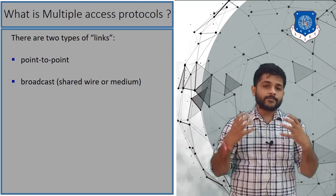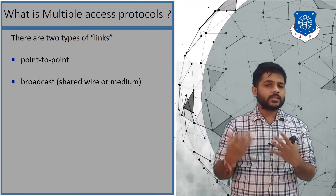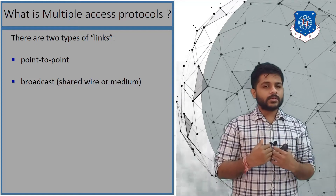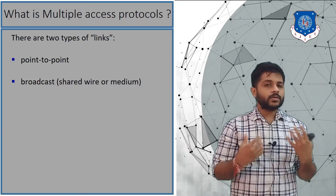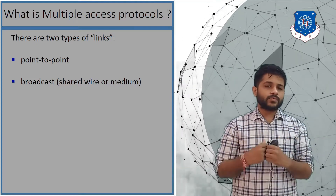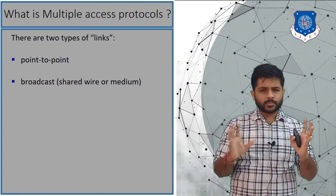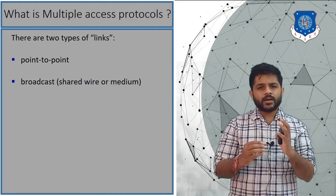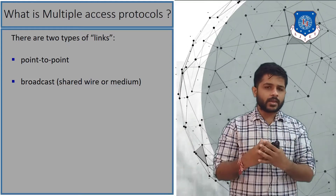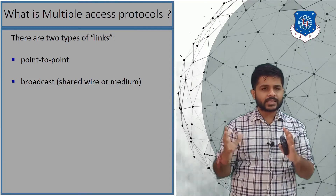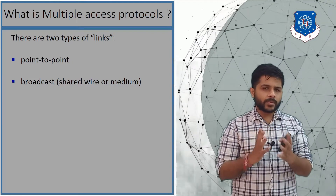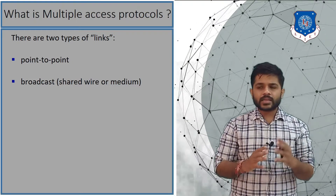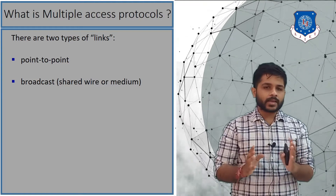Point-to-point link is very simple because if one device is sending data, the other device will be receiving, and vice versa. So there is very little chance of collision. If there is a miscommunication or the system is not working properly, both devices might send data at the same time causing a problem, but other than that there will be no problem in the point-to-point link.